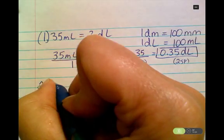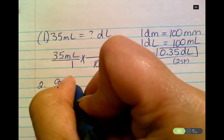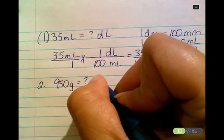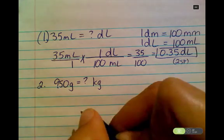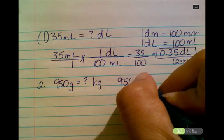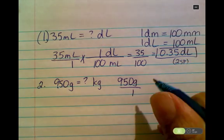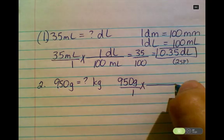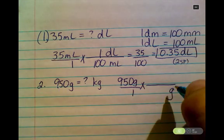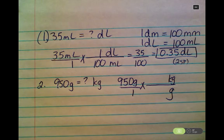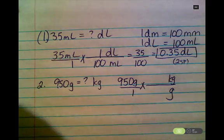Number two: 950 grams is equal to how many kilograms? 950 grams over one times, draw my line, I want grams on the bottom to cancel. Kilograms goes on top. I know that gram is a basic unit and kilo is three hops to the left. Let's look at that on the chart.